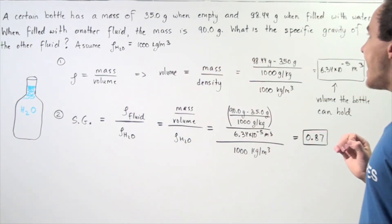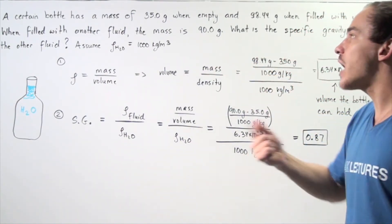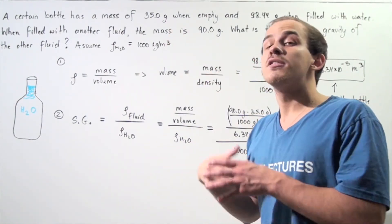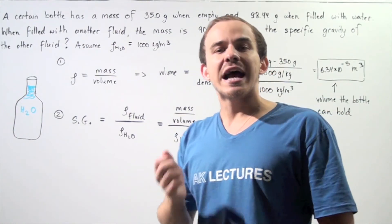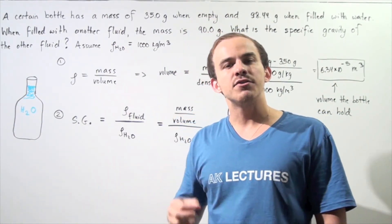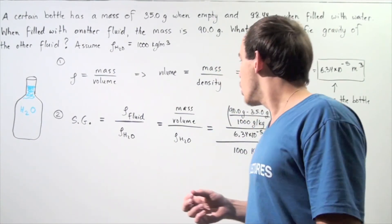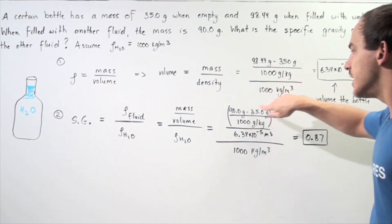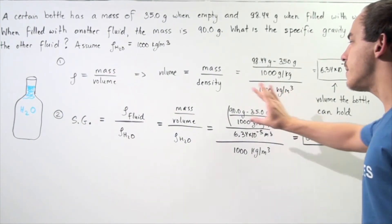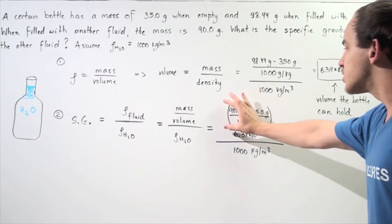And to find the mass, we simply take 90 grams, subtract 35 grams, the mass of the bottle, and that will give us the mass of the other fluid. And to convert from grams to kilograms, we simply take the difference, divide that by 1,000, and that gives us the mass in kilograms.